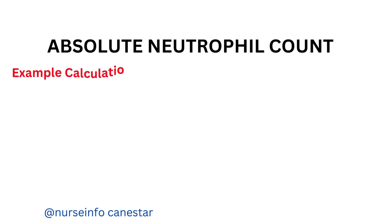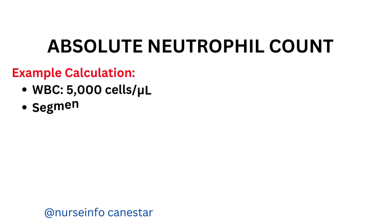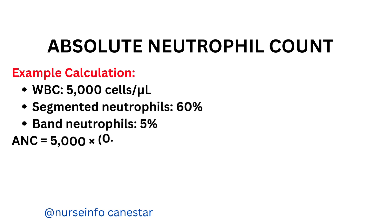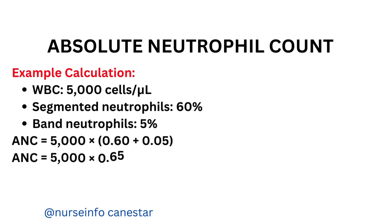Example calculation: WBC = 5,000 cells per microliter. Segmented neutrophils = 60%. Band neutrophils = 5%. ANC equals 5,000 times (0.60 plus 0.05). ANC equals 5,000 times 0.65. ANC equals 3,250 cells per microliter.